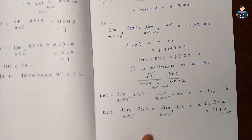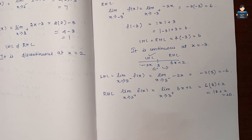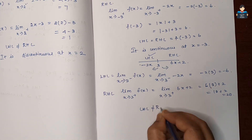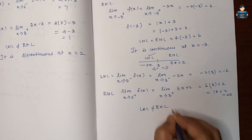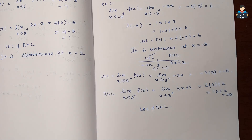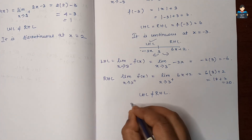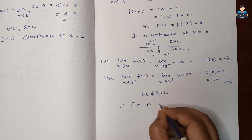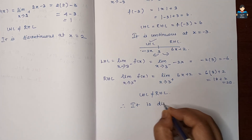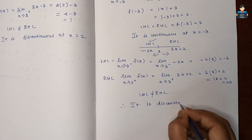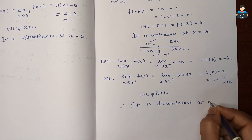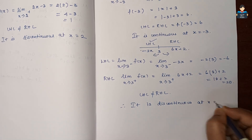LHL = −6 and RHL = 20, which are not equal. Therefore, the function is discontinuous at x = 3.